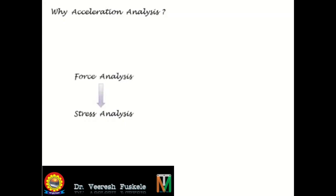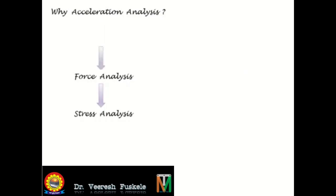The forces at various points on the links of a mechanism can be found out by the formula: force is equal to mass into acceleration. So to find out the force we need to know the acceleration at various points on the links of a mechanism, and for this we need to do the acceleration analysis. Knowing the acceleration we can find out the force, and knowing the force we can find out the stresses. That means acceleration diagrams are the fundamentals to the stress analysis of a mechanism.